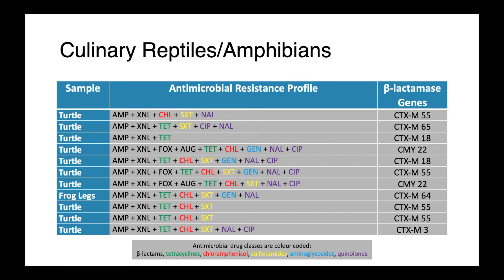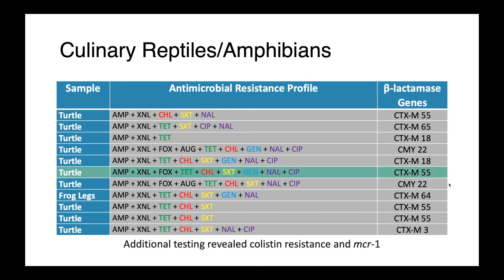The more colorful a row is, the more multi-drug resistant that particular isolate is. On the far right, we have the beta-lactamase genes that we found — CTXM-55, 65, and 18, as well as CMY2 were identified. One organism we were really interested in was a particular E. coli from a turtle, where additional testing revealed colistin resistance and the presence of MCR1, a mobile colistin resistance gene found on a plasmid.